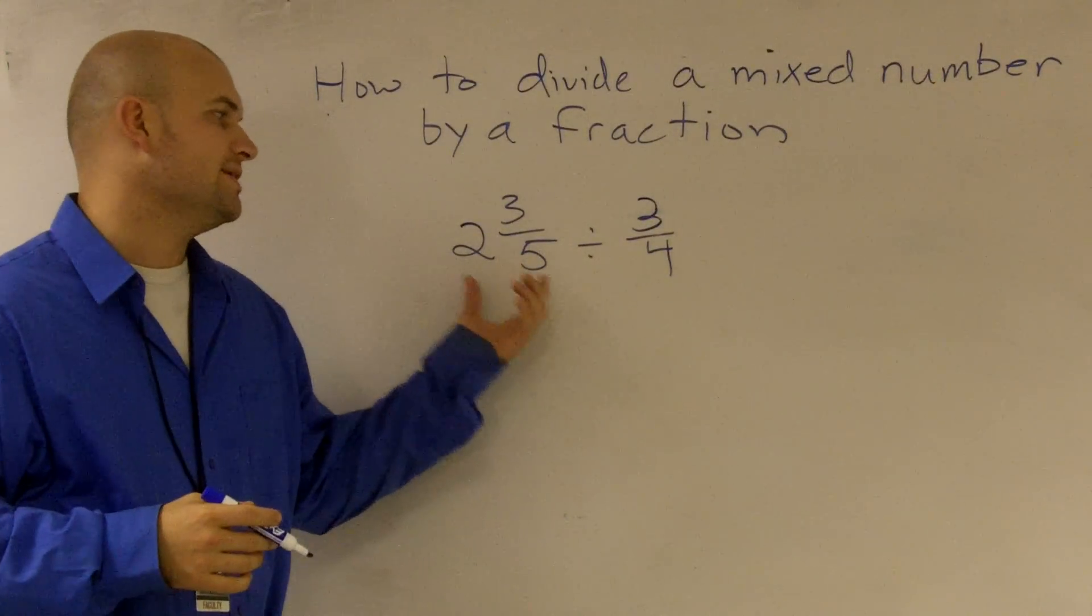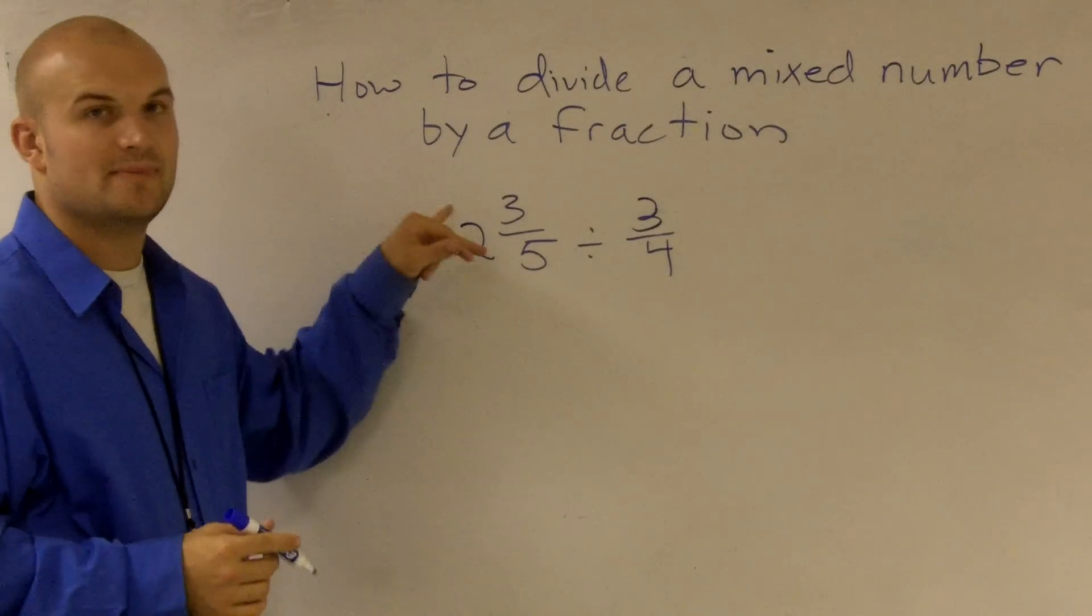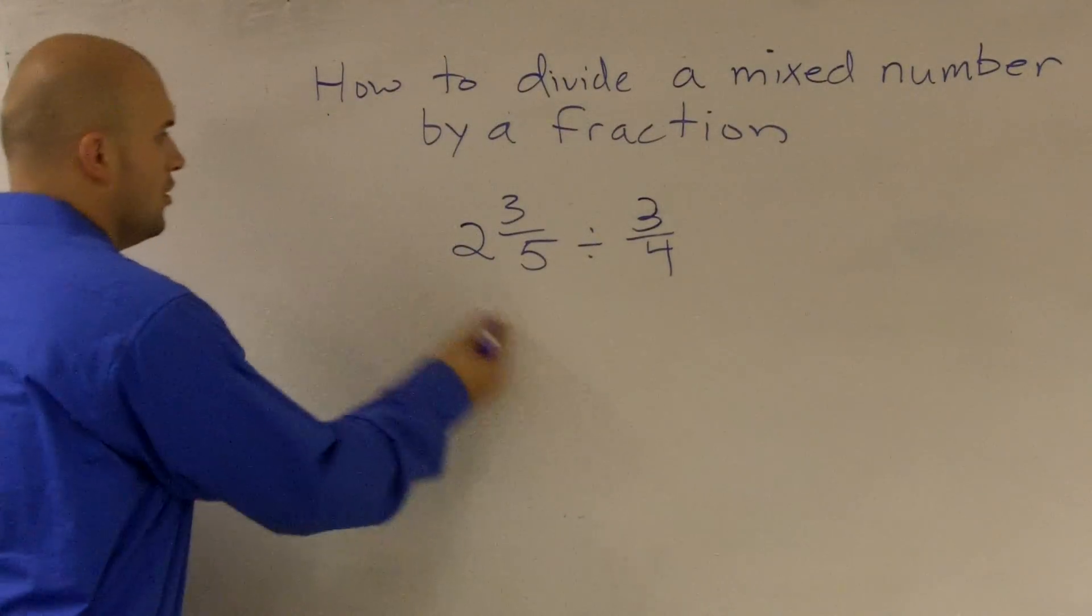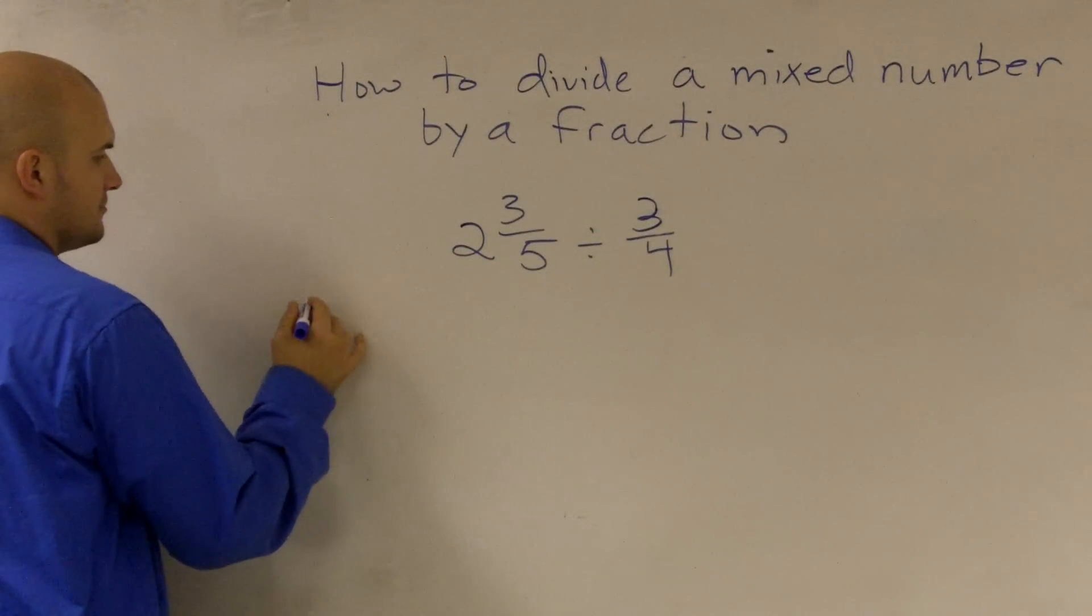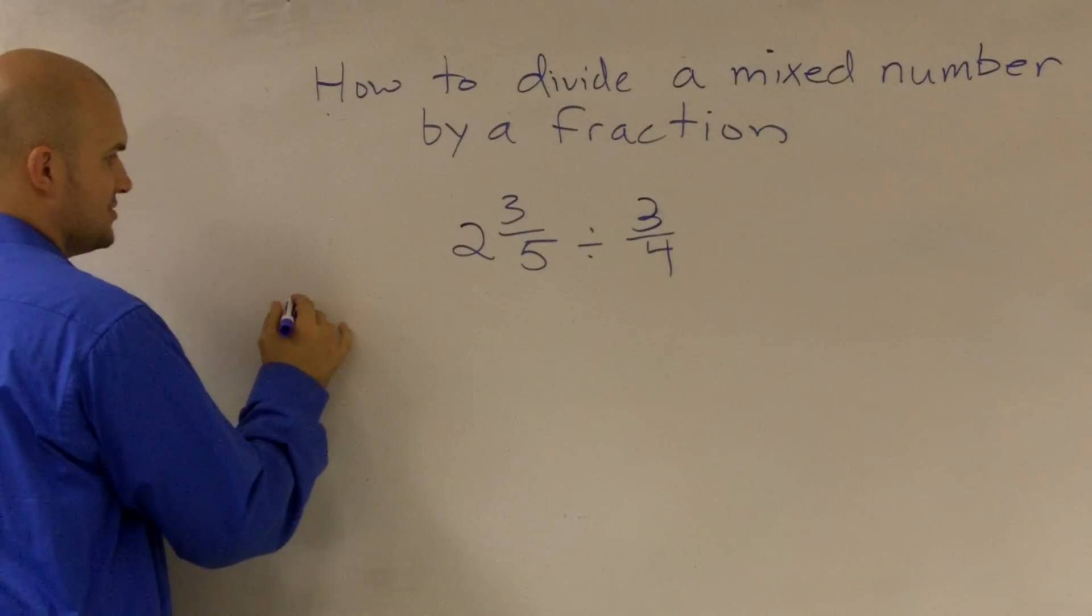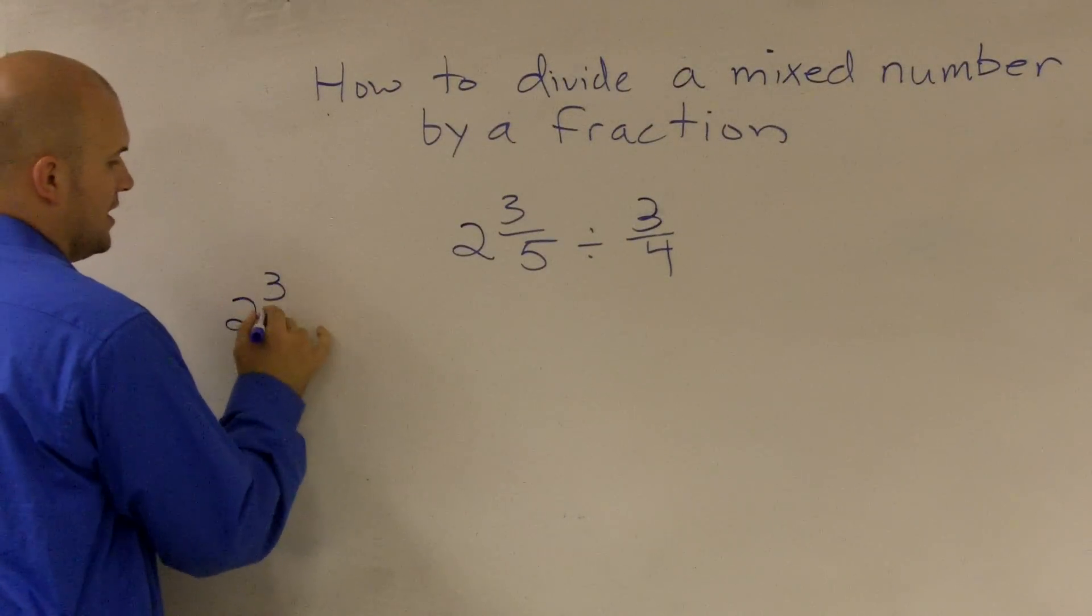What we need to first do is convert our mixed number into a fraction. So over on this sidebar, I'll convert our mixed number to a fraction. We'll have 2 and 3 fifths.